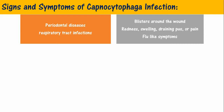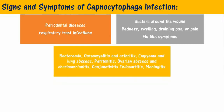Infections of both origins can travel into the blood and subsequently cause more severe infections such as bacteremia, potentially complicated by septic shock. Infections of the musculoskeletal system such as osteomyelitis and arthritis. Infections of the lung such as empyema and lung abscess. Infections of the digestive system such as peritonitis. Maternal-fetal infections such as ovarian abscess and chorioamnionitis. Eye infection such as conjunctivitis. Infection of the heart such as endocarditis. Or infection in the brain such as meningitis.